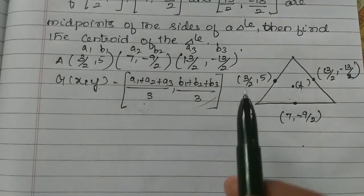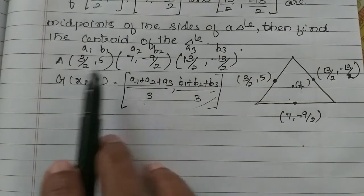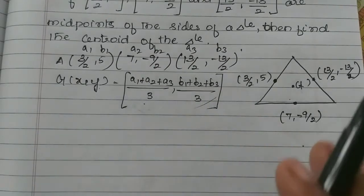(a1 + a2 + a3)/3, (b1 + b2 + b3)/3. So, we will change the formula: a1, b1, a2, b2, and a3, b3.